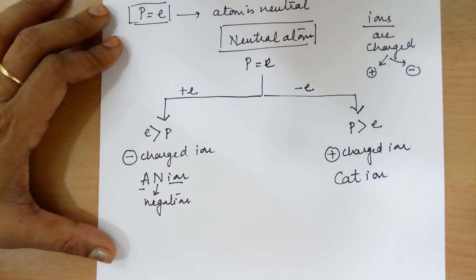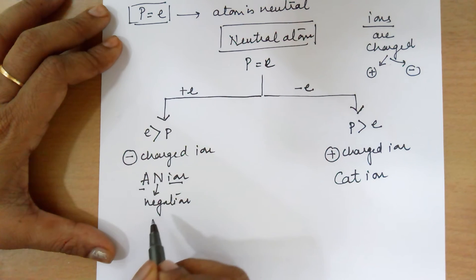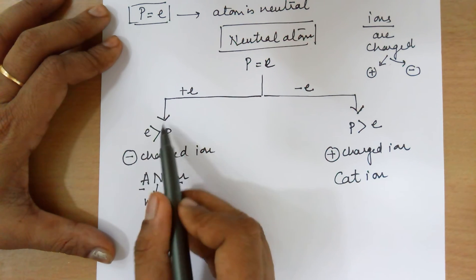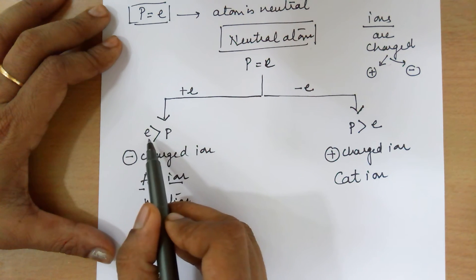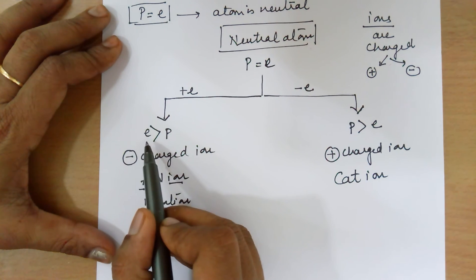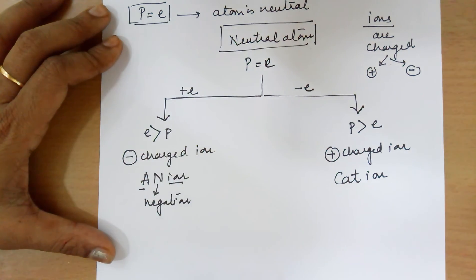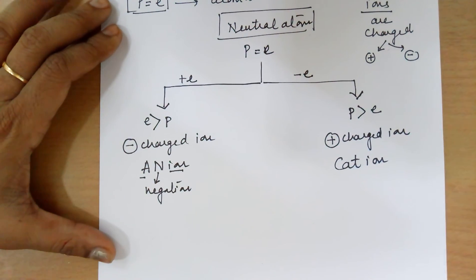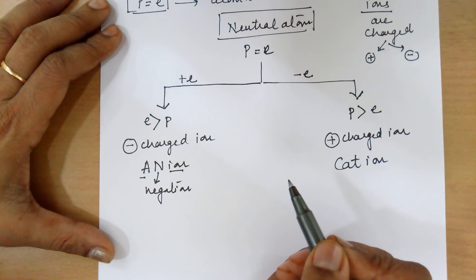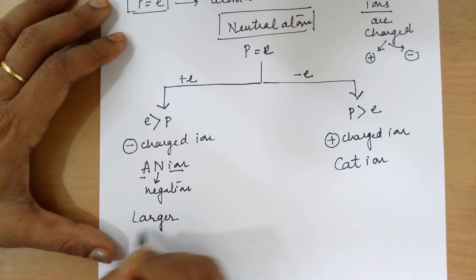Now talking about the radius part. When we have a neutral atom, protons are equal to electrons, and the electrons are attracted by the protons. In case of an anion, since electrons are more than the protons, the same number of protons is now attracting more number of electrons. Hence, the charge felt by each electron will be less as compared to a neutral atom. The proton's force felt per electron is going to be less, so the size will slightly increase — anions are larger in size.